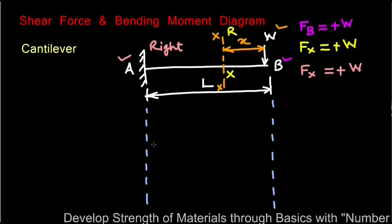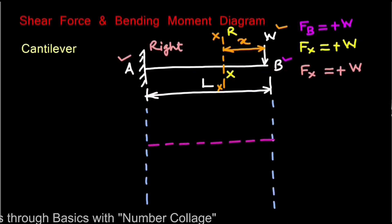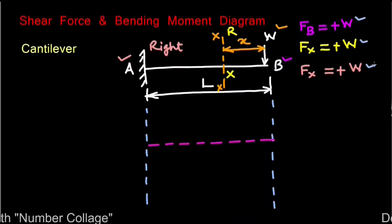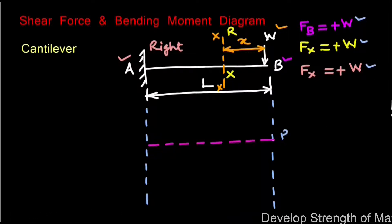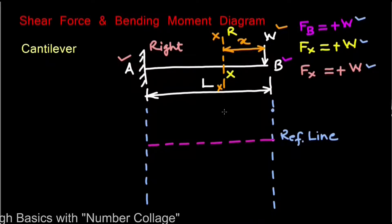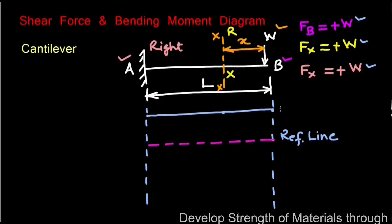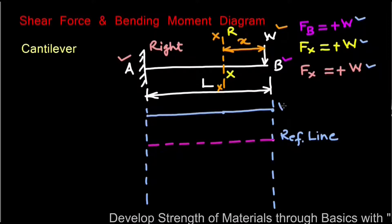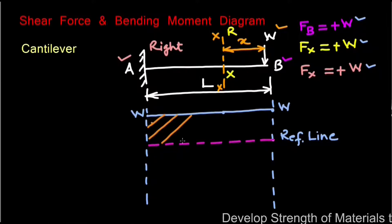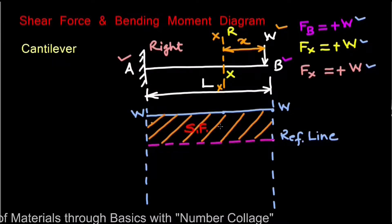We show the shear force values graphically below the loading diagram. We first draw a reference horizontal line. Since all shear force values are positive we show them above this reference line. Since the values at points B, X, and A are the same, we draw a horizontal line indicating the shear force value W, forming a rectangle that represents the shear force diagram of this cantilever.